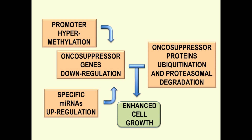Enhanced HCC cell growth and survival also depends on downregulation of several tumor suppressors, consequent to promoter hypermethylation, linked DNA methyltransferase deregulation, as well as to upregulation of specific miRNAs, and increases in ubiquitination and proteasomal degradation of tumor suppressor proteins.